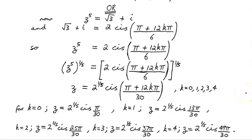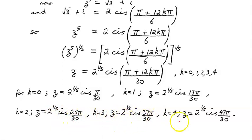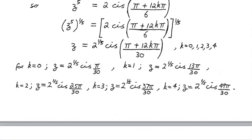Let's write the solutions out individually. For k=0: z = 2^(1/5) cis(π/30). For k=1: z = 2^(1/5) cis(13π/30). For k=2: z = 2^(1/5) cis(25π/30). For k=3 and k=4, and so on. Notice the radius is the same for each. All these points lie on a circle — this is going to be a feature of equations of the type z^n = a where a is complex.